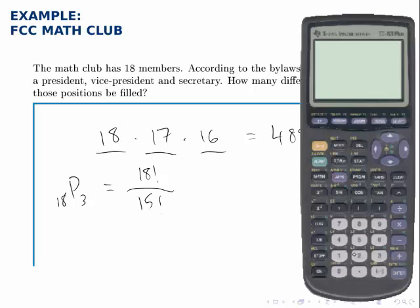So if we go to the calculator and type in 18 factorial divided by 15 factorial, we get the same answer we found in the first part.